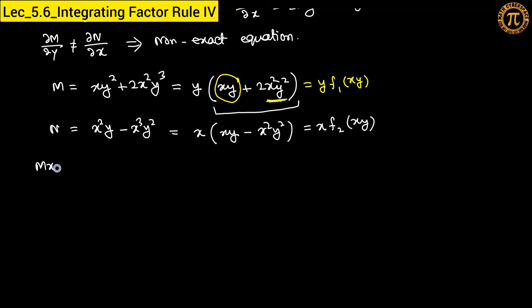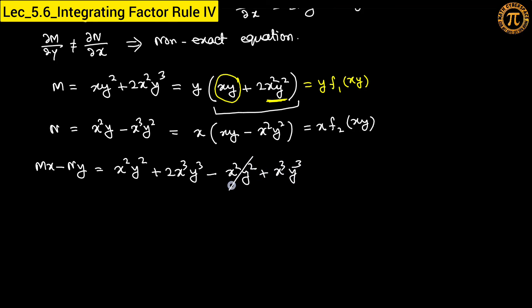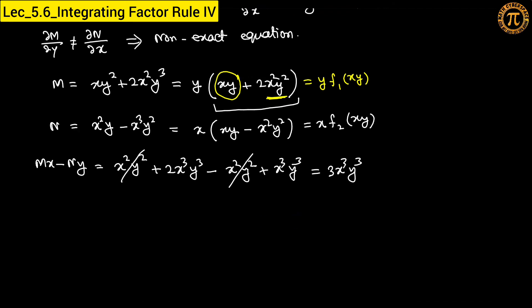Now calculate Mx − Ny: M·x = x·(xy² + 2x²y³) = x²y² + 2x³y³, and N·y = y·(x²y − x³y²) = x²y² − x³y³. So Mx − Ny = (x²y² + 2x³y³) − (x²y² − x³y³) = 3x³y³. Since this is non-zero, the integrating factor is 1/(3x³y³).